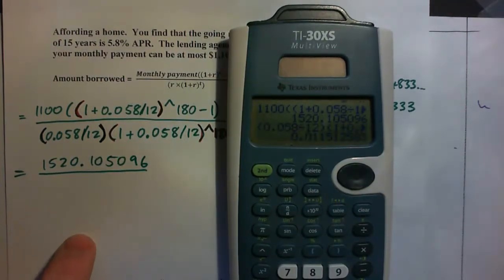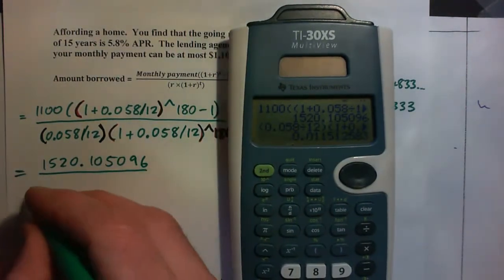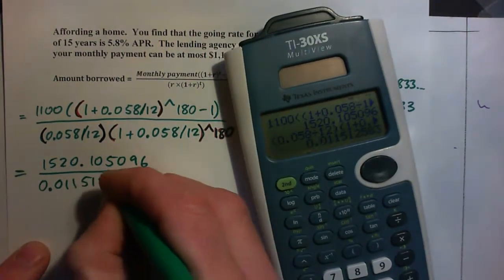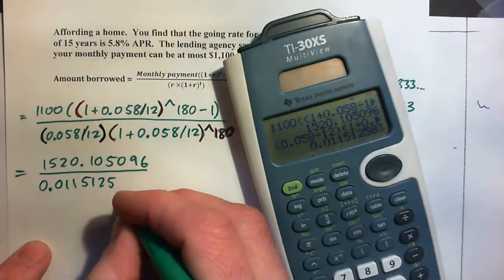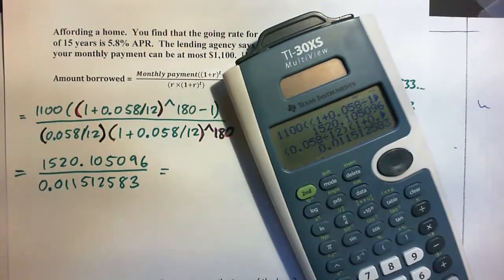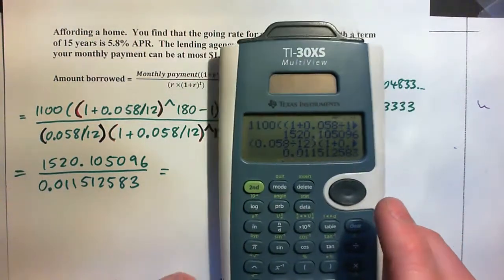And we get 0.011512583. So if we type these in, then we'll get our answer.